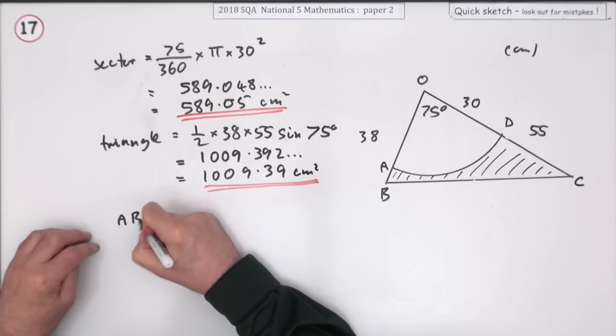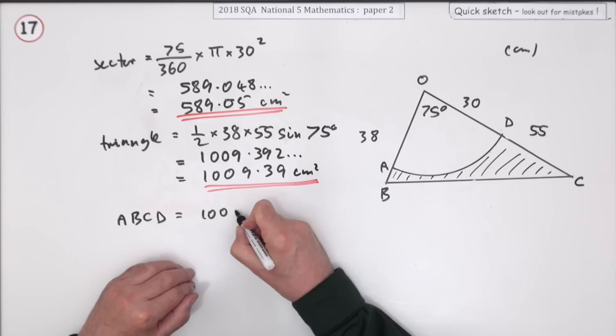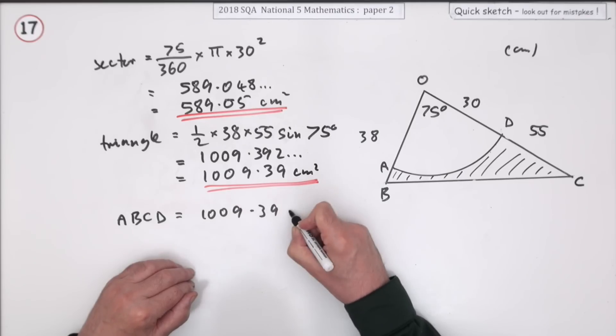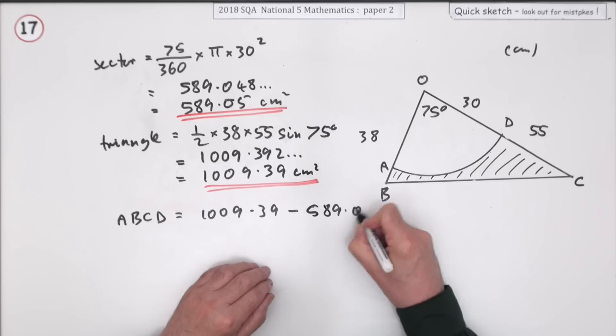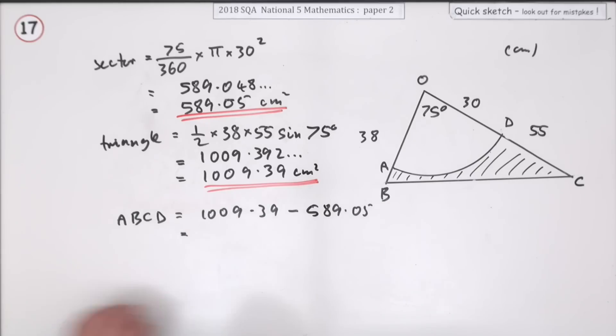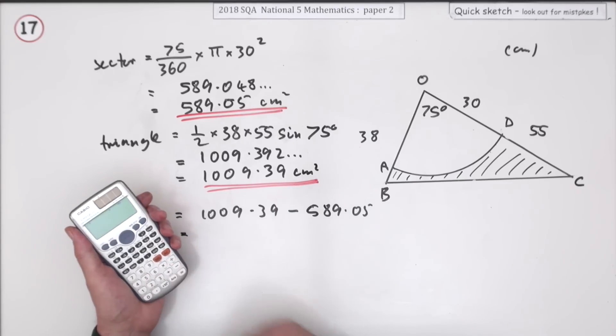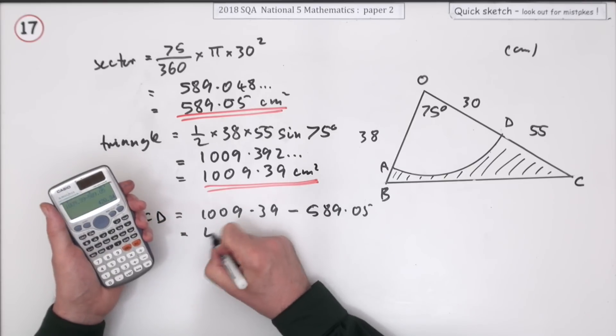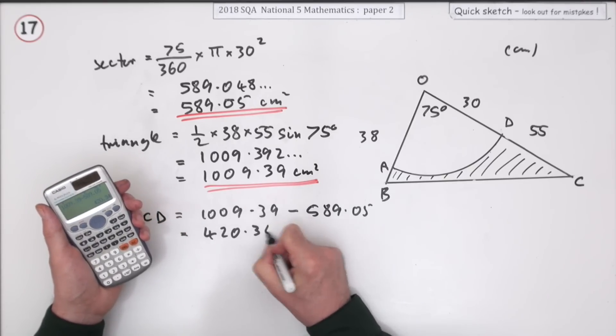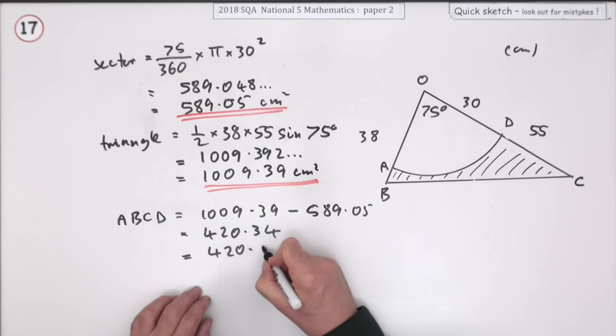The area of the shaded region will be the difference between them: 1009.39 minus 589.05, which comes to 420.34. I'll take it down to 420.3 centimeter squared.